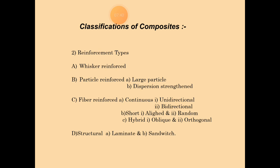Next is fiber reinforcement, which includes continuous, short, and hybrid types. Continuous is divided into unidirectional and bidirectional. Short has aligned and random types. Hybrid includes oblique and orthogonal.